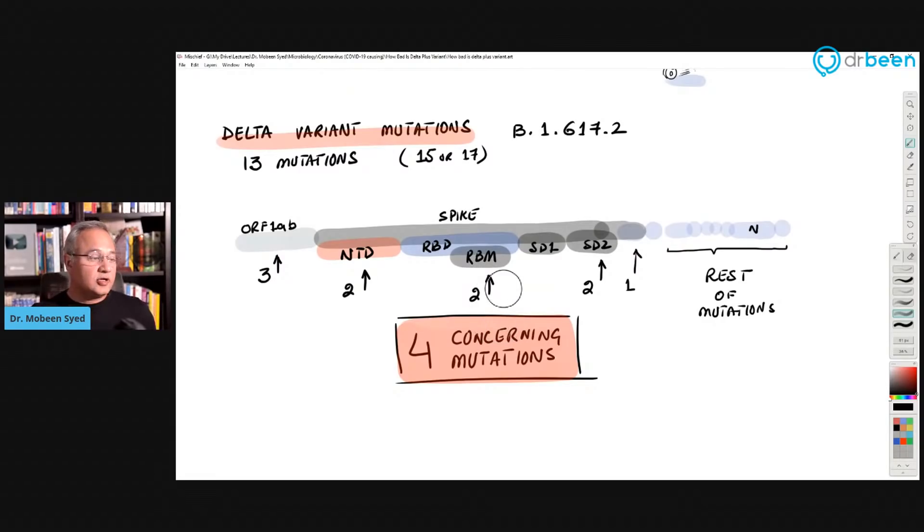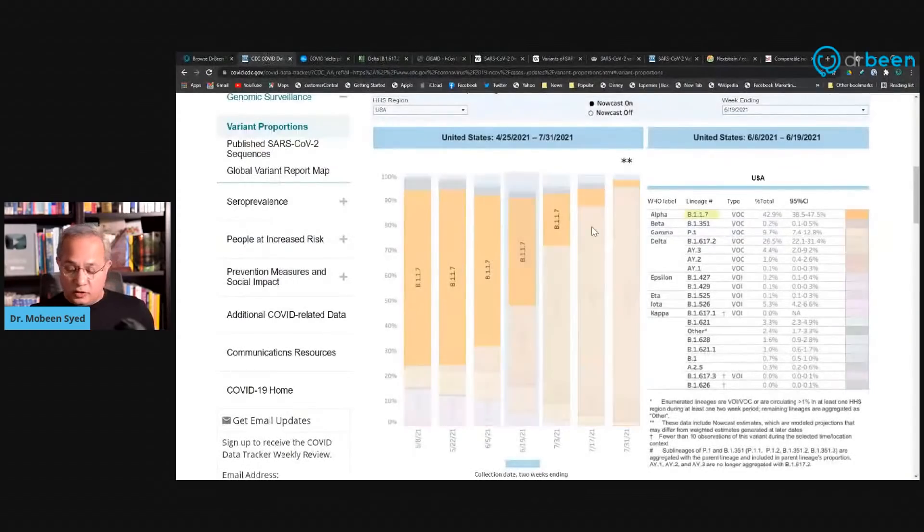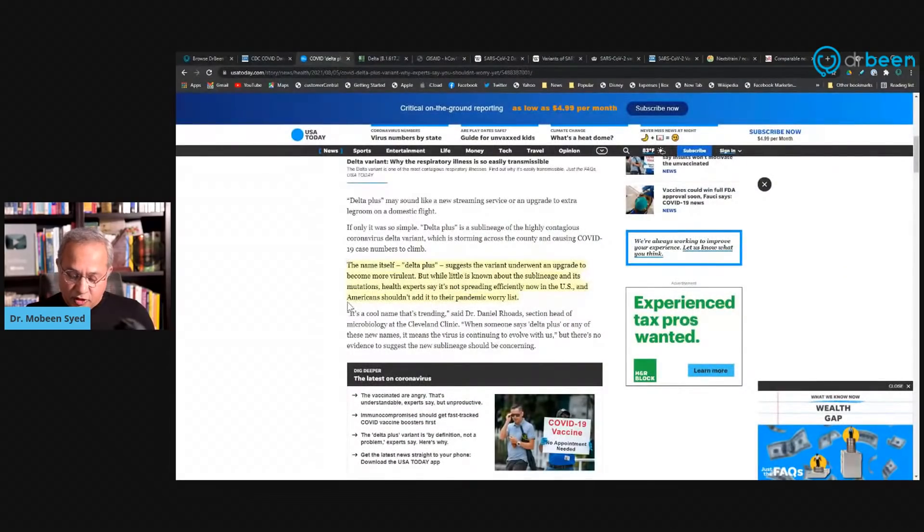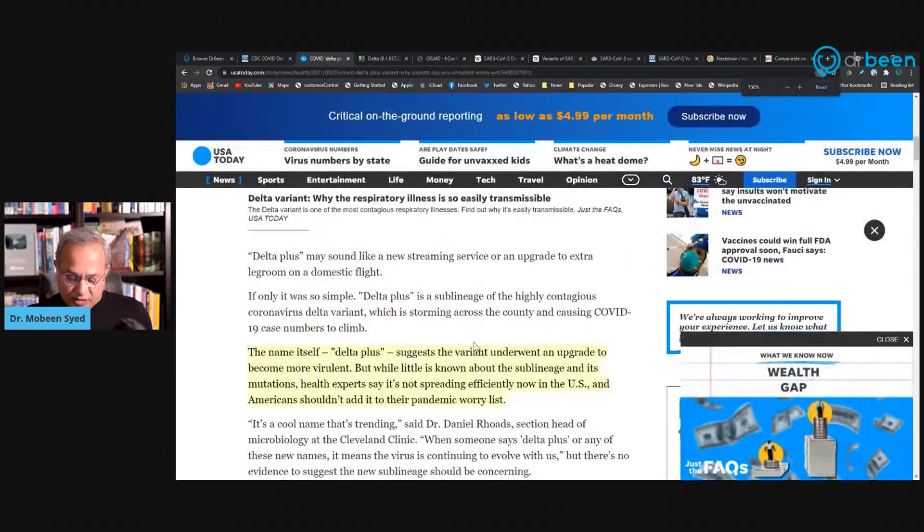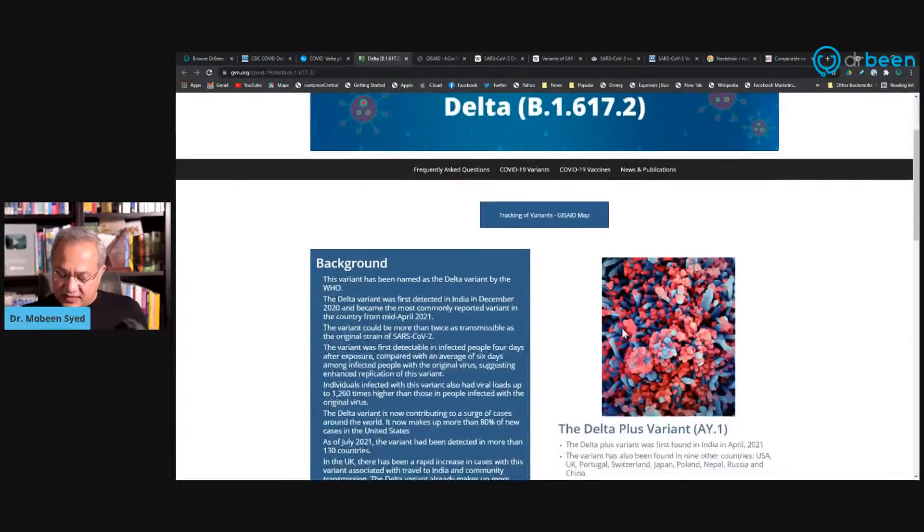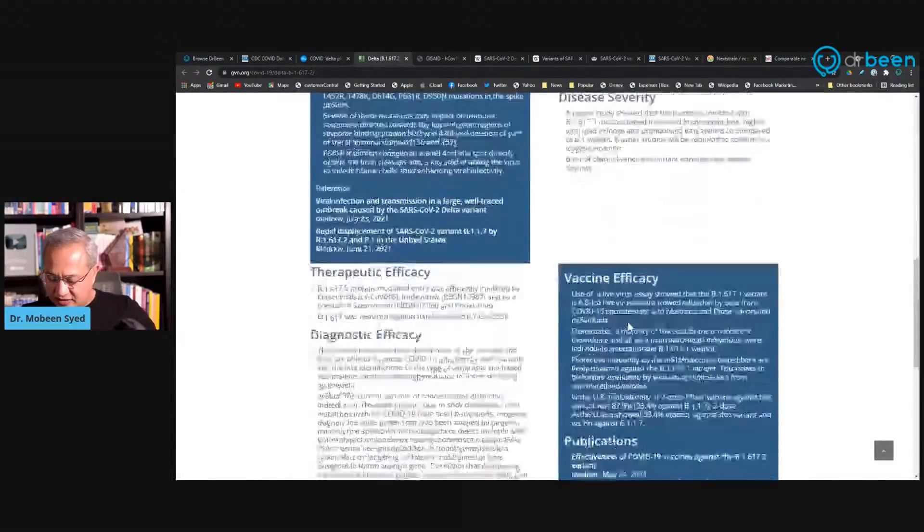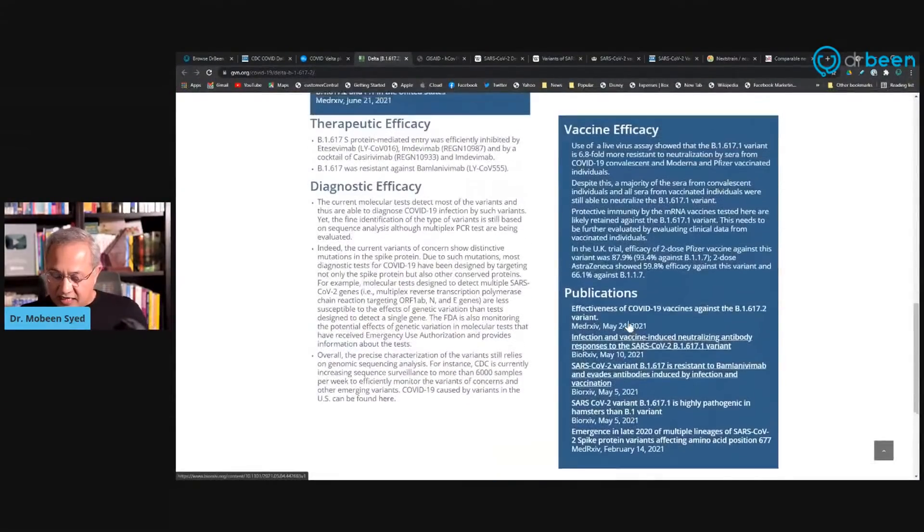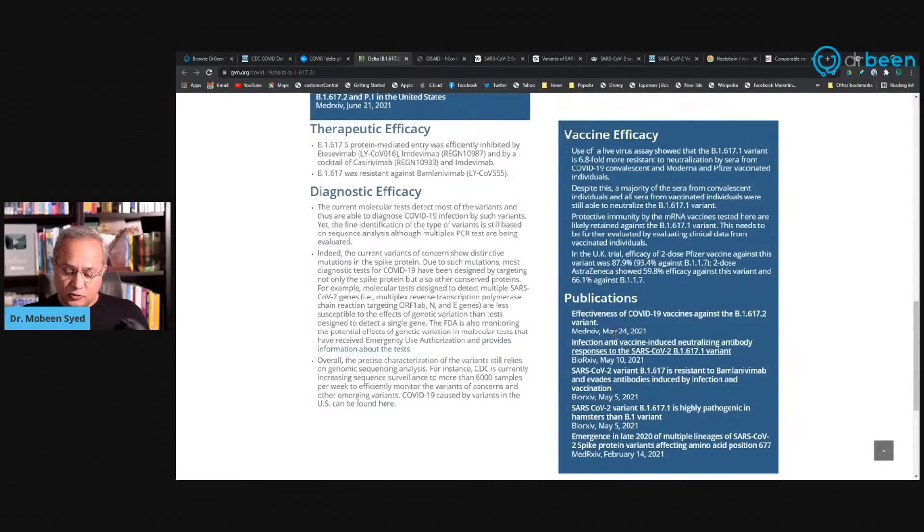So that is the discussion. I'm going to just very quickly look at the table's data with you. So here, the Delta plus suggests a variant underwent an upgrade to become more virulent. But while little is known about the sub lineage and its mutation, health experts say it is not spreading efficiently. Now in the US and Americans should add to their pandemic worry list. And we just saw the data as well. This is Delta plus here on this page. Again, the link is in the description. These references are interesting to look at.